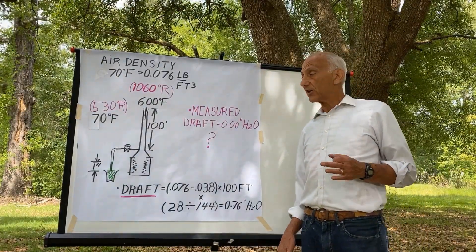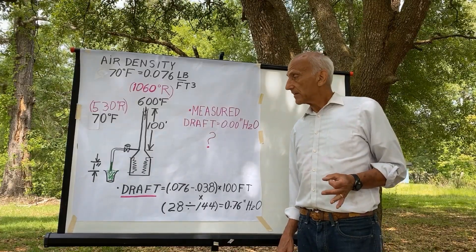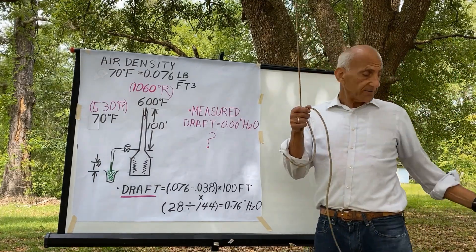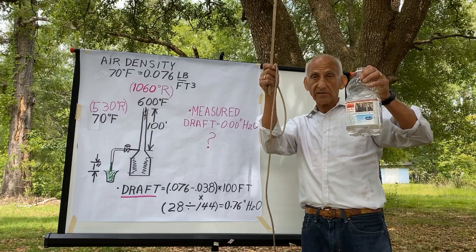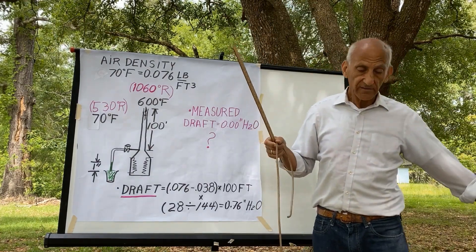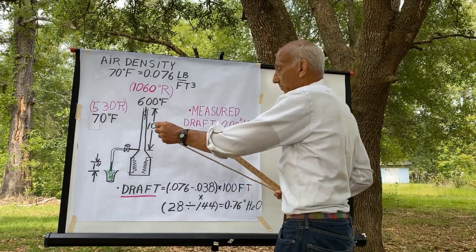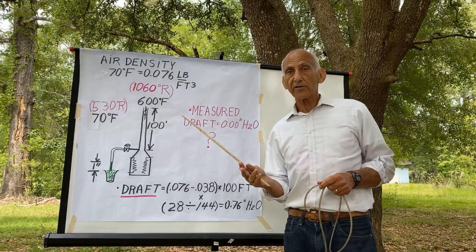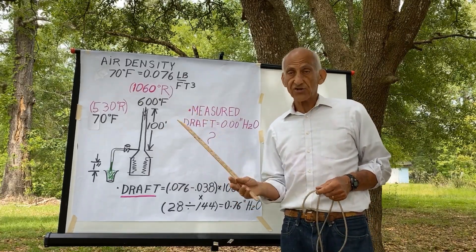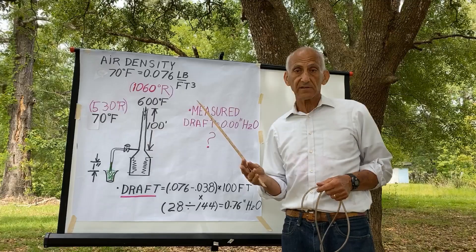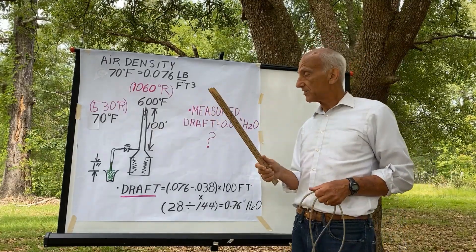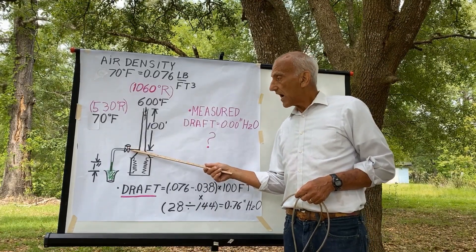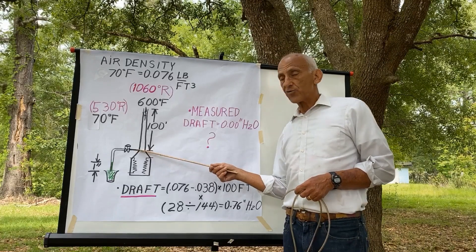So what I decided to do is to go out and measure the draft myself. To measure draft, I typically just take a bottle of water and a piece of plastic tubing, insert the tubing at some point where I want to check the draft, and see how far the water is drawn up into the tubing. The level of water that is sucked up is inches of water draft. And just as they suggested, when I go out and measure the draft below the bottom row of convective tubes, I measure a draft of zero.